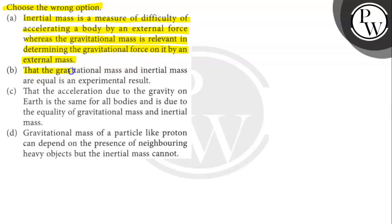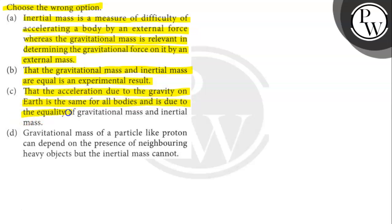Option B says that the gravitational mass and inertial mass are equal is an experimental result. Option C says that the acceleration due to gravity on Earth is the same for all bodies and is due to the equality of gravitational mass and inertial mass.